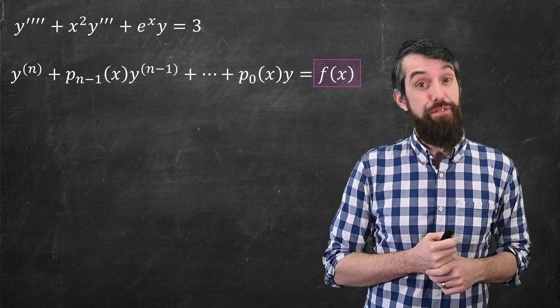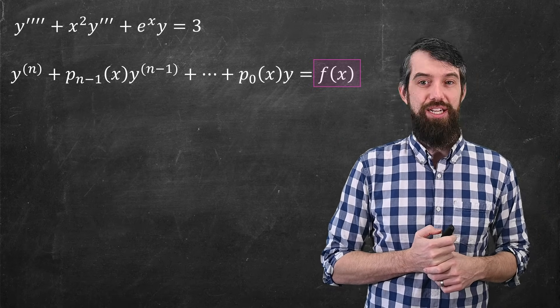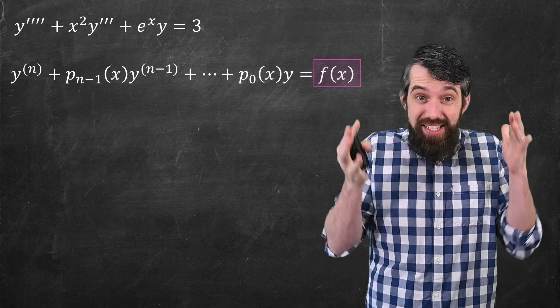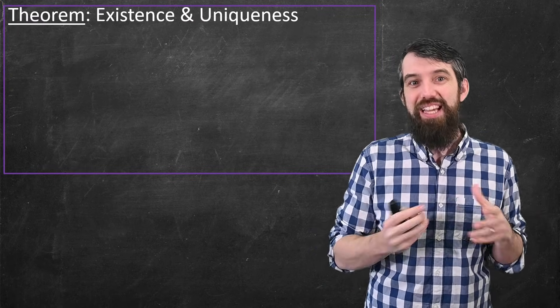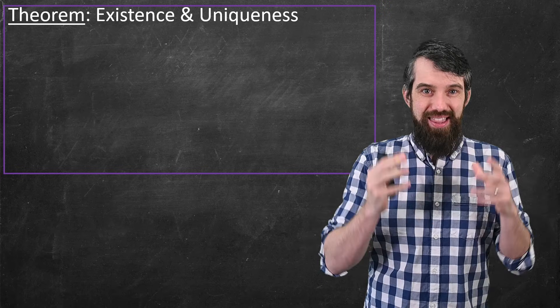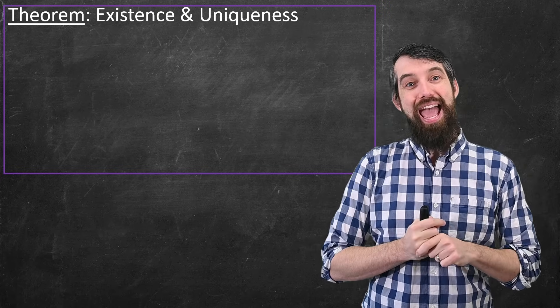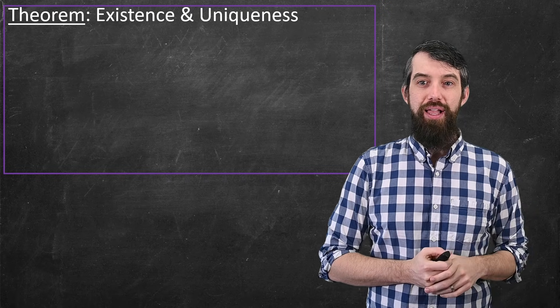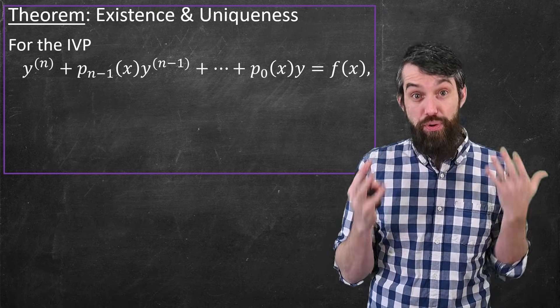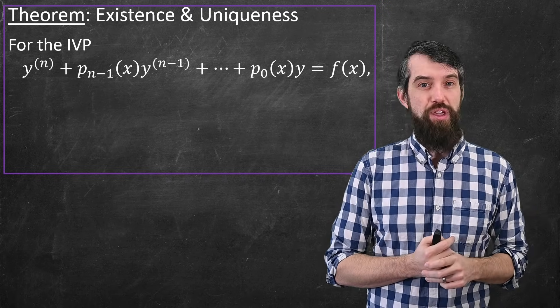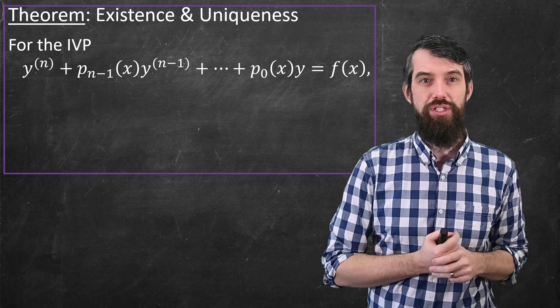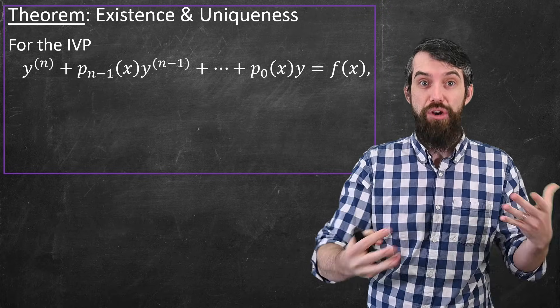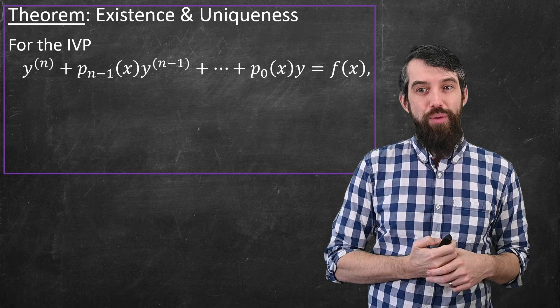Alright, so let me state my first theorem that's relevant for such differential equations. This is my existence and uniqueness theorem, the key thing that makes differential equations work. It says this is when there exists a solution, and even better, when that solution is unique. So the context here is I start with an initial value problem, an IVP. An initial value problem consists of a differential equation, so here I'm assuming a linear differential equation, together with initial conditions.